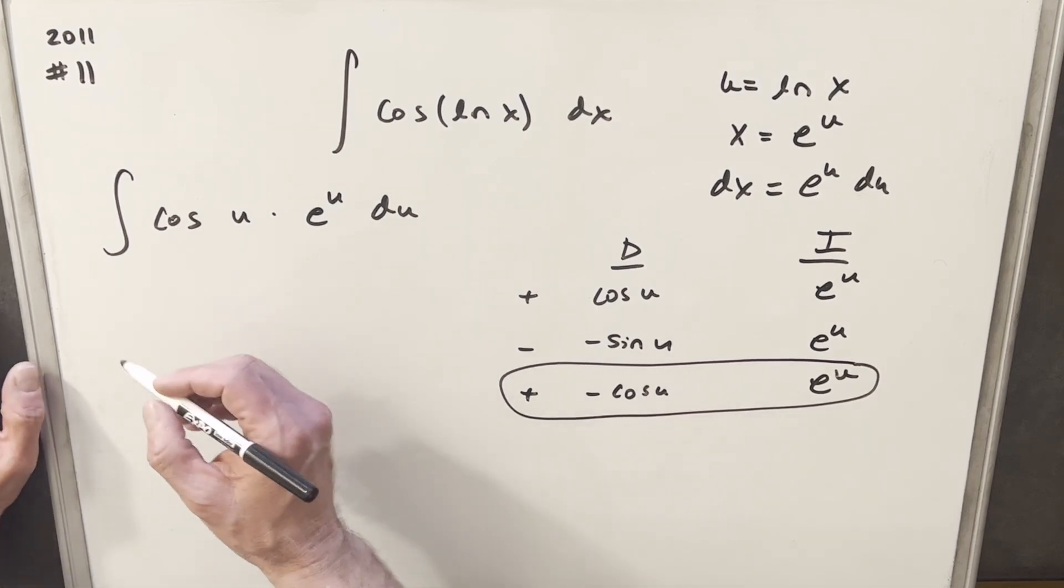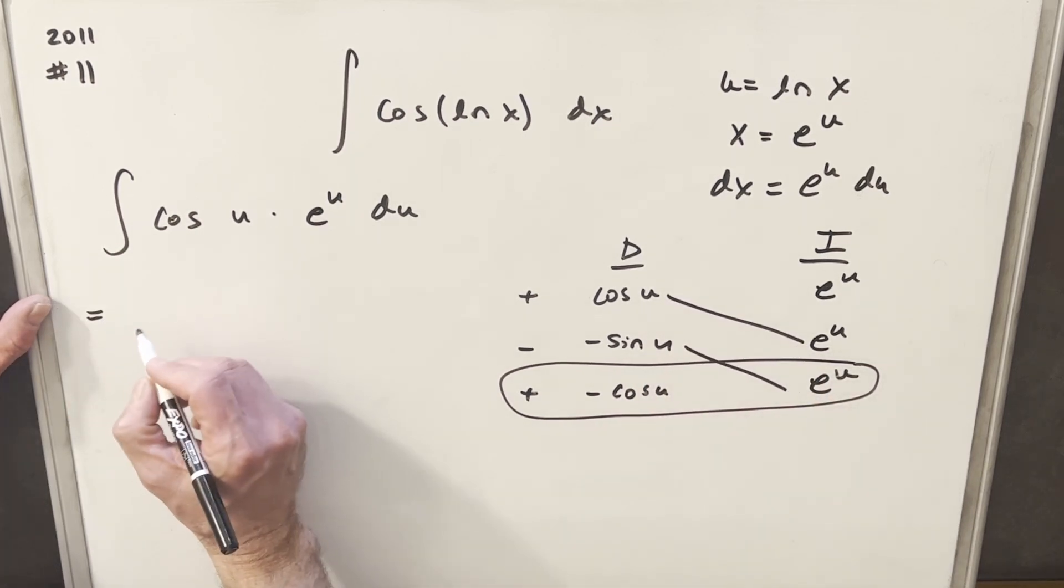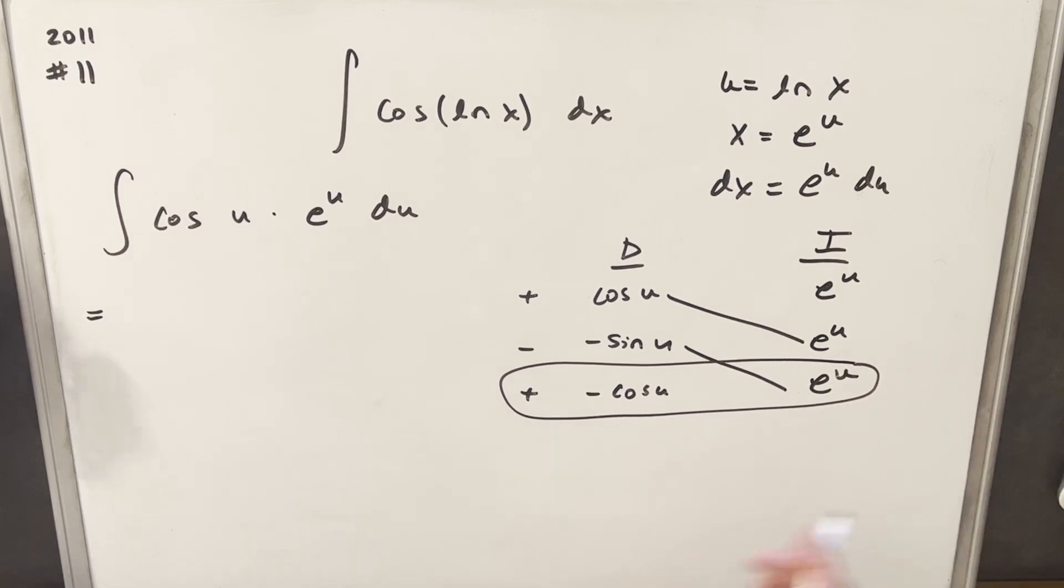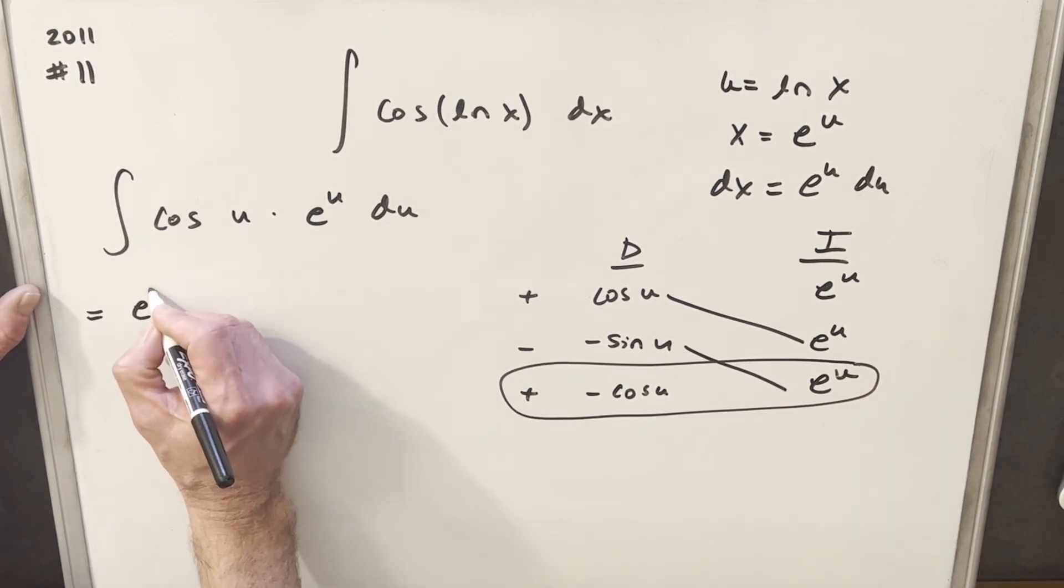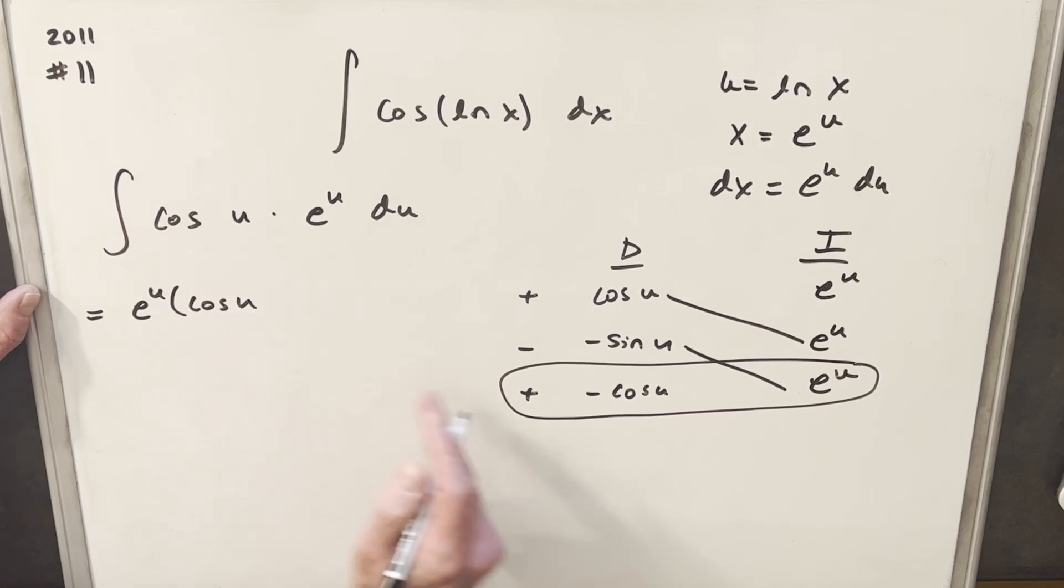So let's put this all together. So what I'm going to do, part of our solution is going to be on these diagonals. Okay, so let's write this out. We're going to have, now because I have e to the u in both terms, I'm just going to kind of factor out that e to the u. So we'll have e to the u, cosine u. Here a minus times a minus is a plus, so we're going to have plus sine u. Again, I pulled the e to the u out.